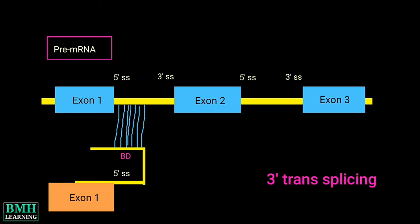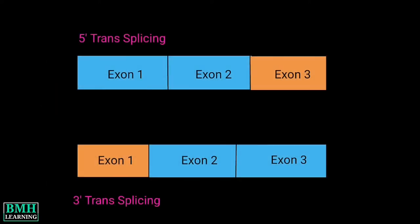The opposite is also true, meaning the spliceosome can also use the three prime splice site from one molecule and the branch point along with the five prime splice site from another molecule to ligate two exons from two different molecules. This gives rise to two types of trans splicing: five prime and three prime trans splicing.